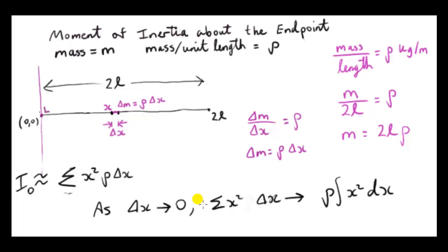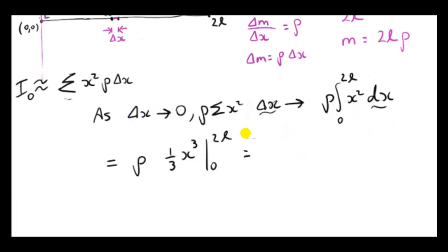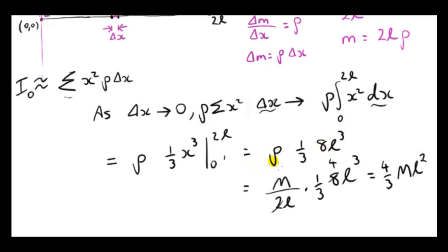Evaluating the integral: (1/3)x³ from 0 to 2L gives (1/3)(2L)³ = (1/3)(8L³) = (8/3)L³, and the lower limit contributes zero. Substituting ρ = M/(2L), we find that the moment of inertia about an axis perpendicular to the rod passing through an endpoint is (4/3)ML², where L is half the length.